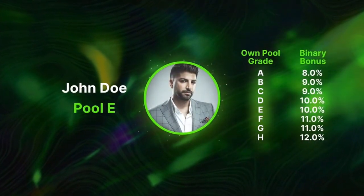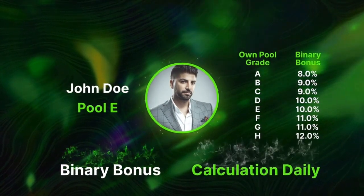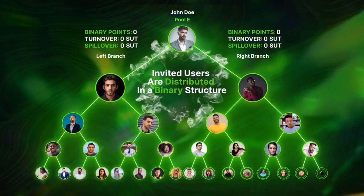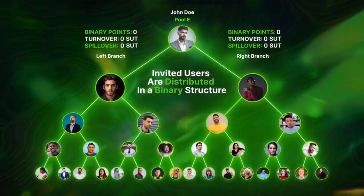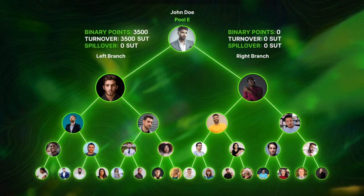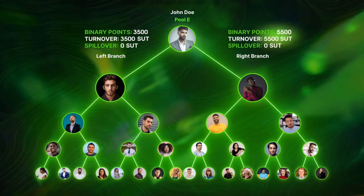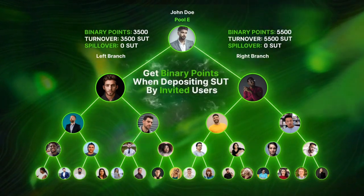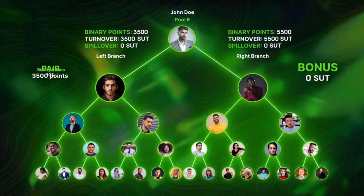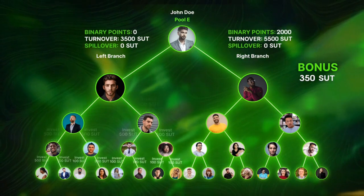A binary bonus is a percentage of the equality of binary points between the right and left binary sides. Binary points are accrued when users invited by you deposit SUT to liquidity pools. You need at least 100 points on both left and right sides to get the binary bonus. The higher your active liquidity pool grade, the more binary bonus you can get.